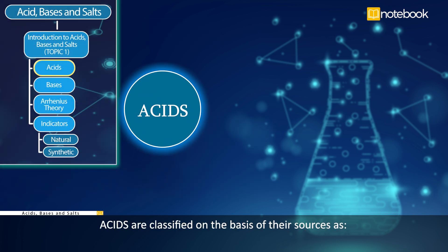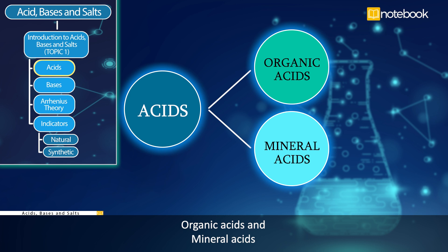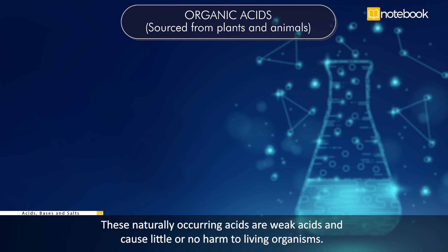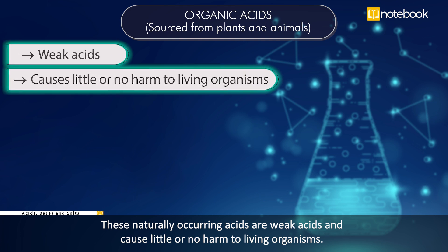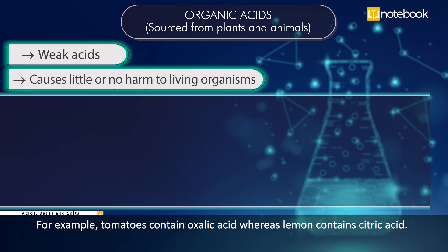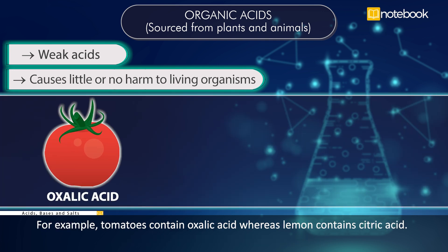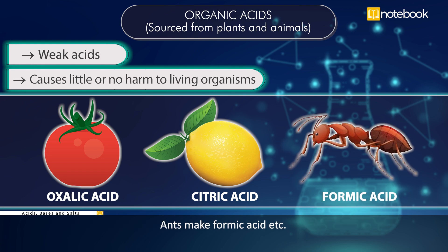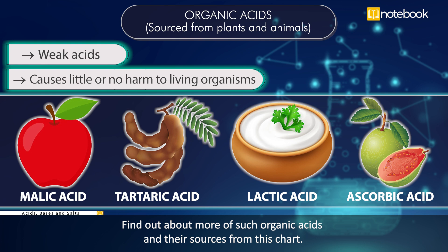Acids are classified on the basis of their sources as organic acids and mineral acids. Organic acids are sourced from plants and animals. These naturally occurring acids are weak acids and cause little or no harm to living organisms. For example, tomatoes contain oxalic acid, lemons contain citric acid, and ants make formic acid. Find out about more organic acids and their sources from the chart.